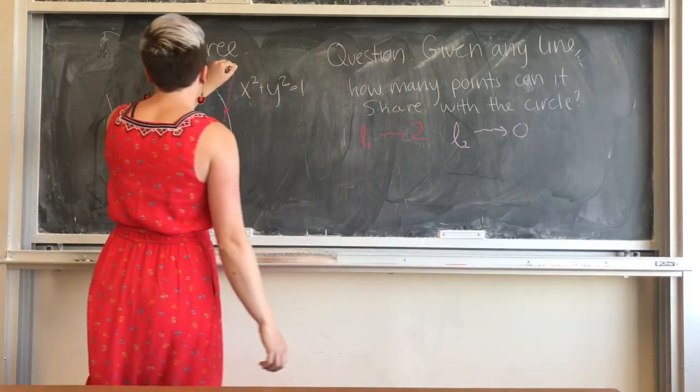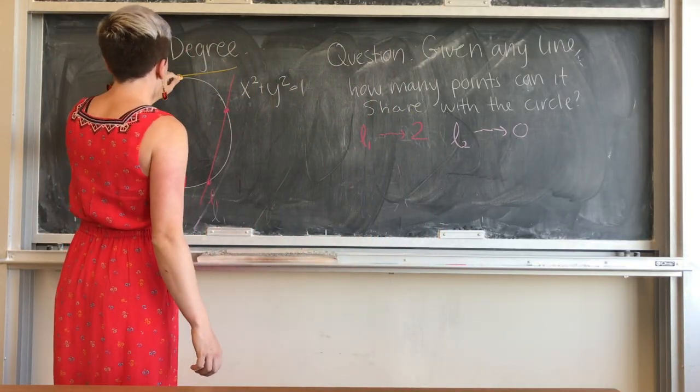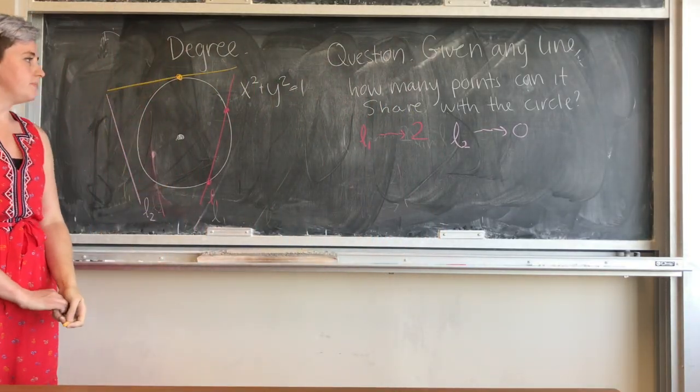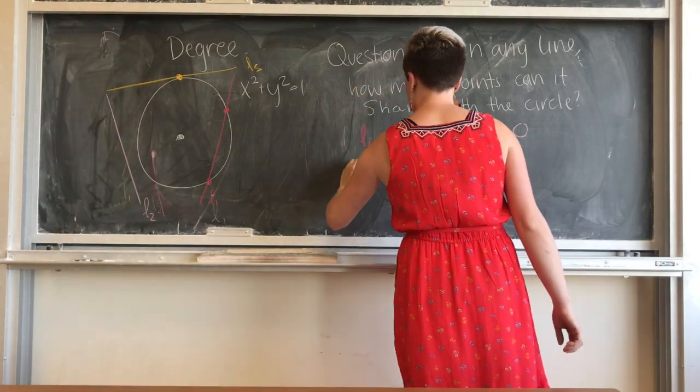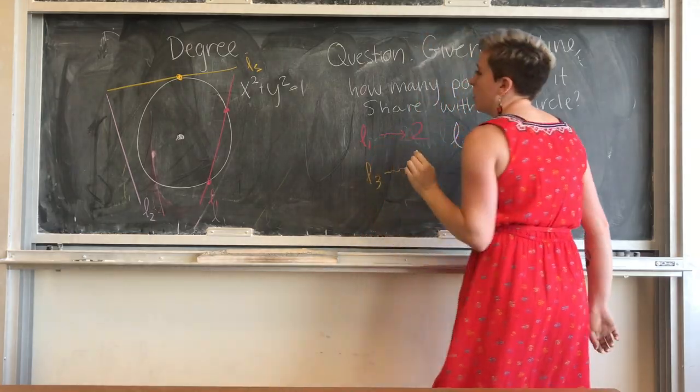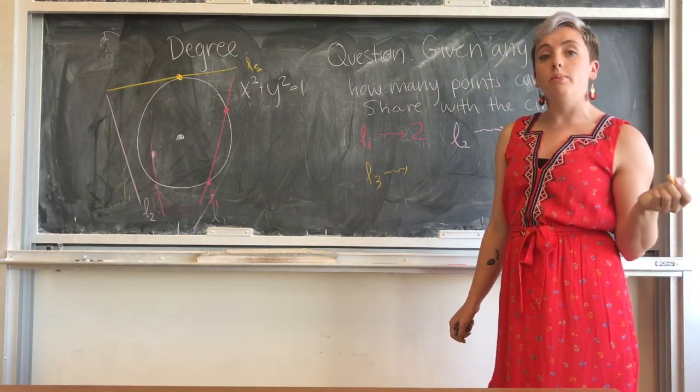The last thing that could happen, and this one's a bit tricky, is that the line is tangent to the circle, like this. In that situation, the line only shares one point with the circle.